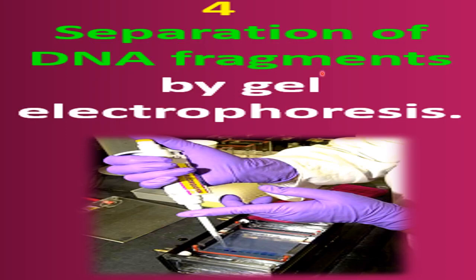Step 4: after using restriction endonucleases we have fragments of DNA. These fragments are separated by gel electrophoresis. In this gel electrophoresis machine — a plate-like structure with well-like structures — the DNA is loaded, and the fragments are separated according to size, appearing as bands. You will study this electrophoresis technique in detail in the biotechnology unit.